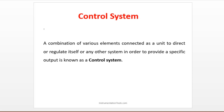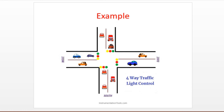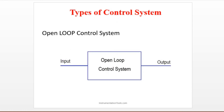Now let's see the definition of a control system. It's a combination of various elements connected as a unit to direct or regulate — itself or any other system — in order to provide a specific desired output. We have two major types of control systems: open loop control system and closed loop control system.